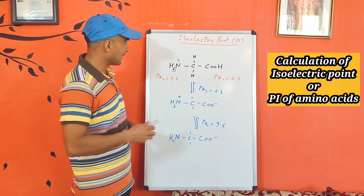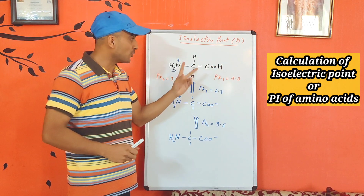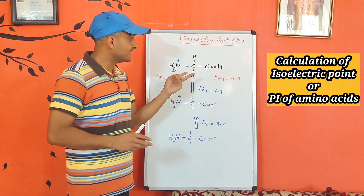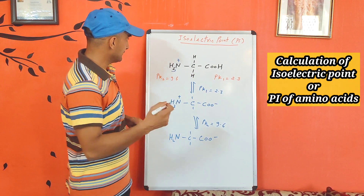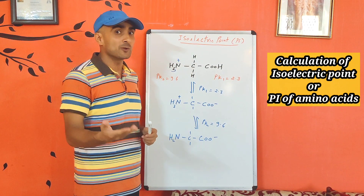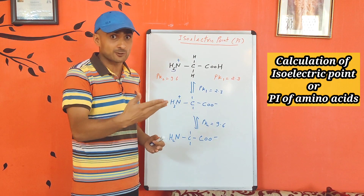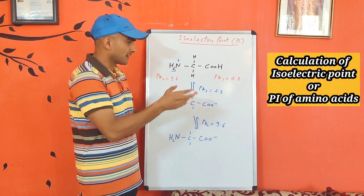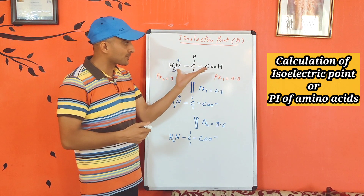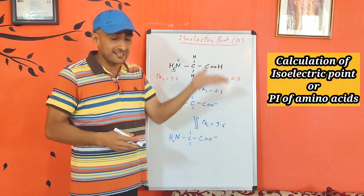Glycine has one amino group (NH2) and one carboxylic group, so there are two ionizable groups. The ionic property of glycine is determined by these two ionizable groups. To calculate the pH where net charge is zero, we need to do a titration of glycine with respect to pH — meaning when you change pH, for example increasing from low to high pH, and you observe how the amino group and acid group behave with respect to changing pH.